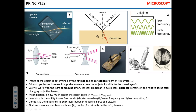To recap: cells divide, accumulate mutations, and can become cancerous. Normally, a system in the cell detects this and the cell kills itself. HPV-16 and HPV-18 block this detection mechanism, so the cell doesn't kill itself — it keeps replicating and eventually becomes cancer.